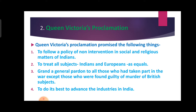The second consequence is Queen Victoria's proclamation. Queen Victoria was the Empress of England. Her proclamation promised: first, to follow a policy of non-intervention in social and religious matters of Indians; second, to treat all subjects — Indians and Europeans — as equals; third, to grant a general pardon to all those who had taken part in the war, except those found guilty of murder of British subjects; and fourth, to do its best to advance industries in India.